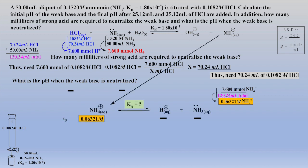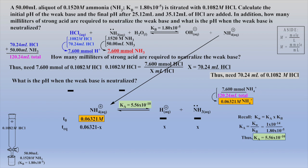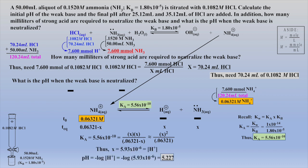At this point, the only species in solution is the unstable reactive conjugate acid, ammonium, and it will react with water to convert back to ammonia, generating an increase in proton concentration. We need to convert the given Kb to a Ka value for this new equilibrium. With our pre-equilibrium calculations completed, our expected equilibrium concentrations are placed into the expression for Ka, the denominator is simplified due to the 5% rule, the concentration of protons is calculated, and finally the pH is determined. Please take a moment to review how all sig fig rules within these calculations were followed.